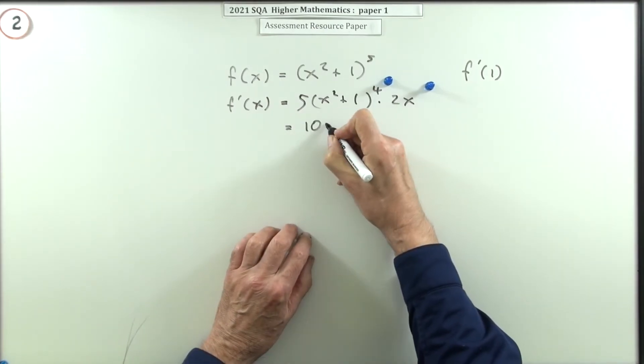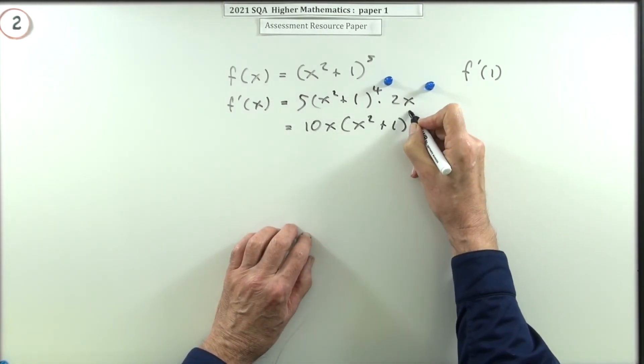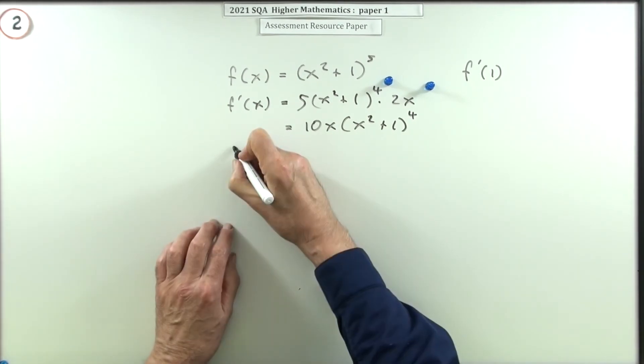So that's just 10x. So I've got 10x times (x squared plus one) to the power four. So now I can go ahead and work out how fast this thing's changing when x is one.